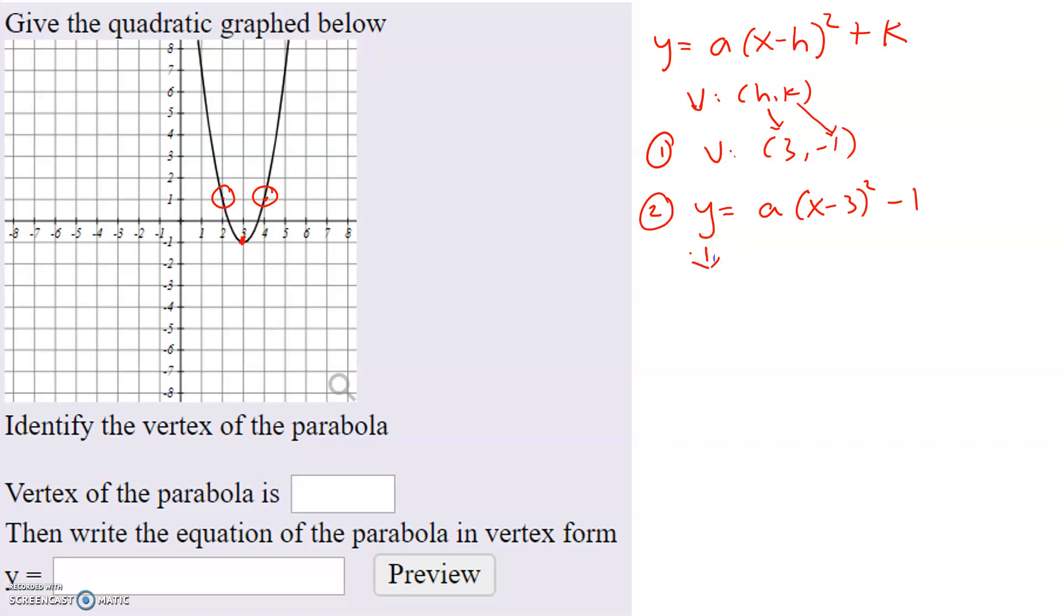So if I choose the point 2 comma 1, this point, then my x value is 2 and the corresponding y value is 1. So I'm going to replace the y with 1. The a is unknown, and I'm going to replace the x value with 2.